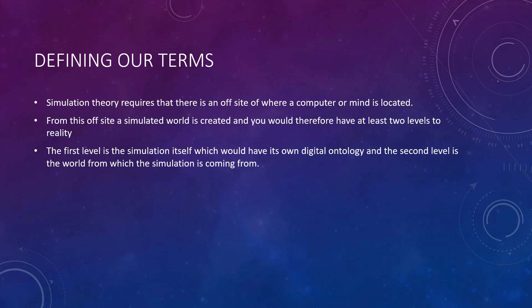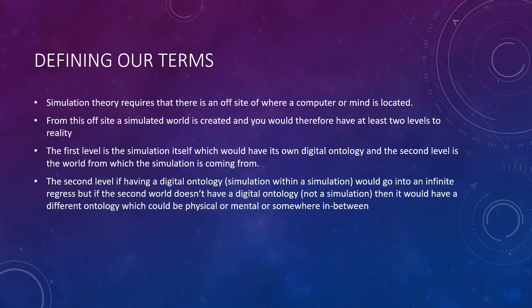The first level is the simulation itself, which would have its own digital ontology, and the second level is the world from which the simulation is coming from. The second level, if having a digital ontology — which is a simulation within a simulation — would go into an infinite regress. But if the second world doesn't have a digital ontology, in other words, if it's not a simulation, then it would have a different ontology, which could either be mental or physical or somewhere in between.